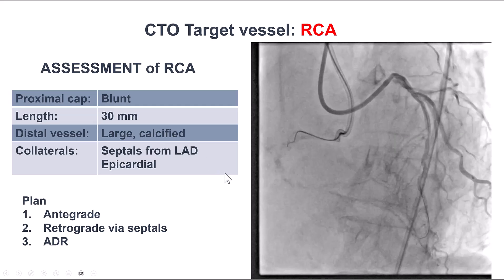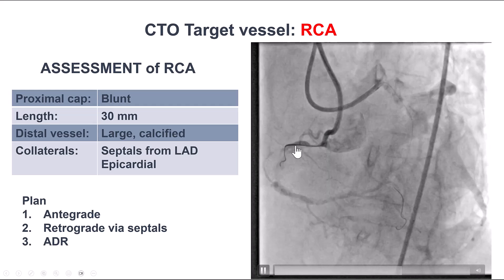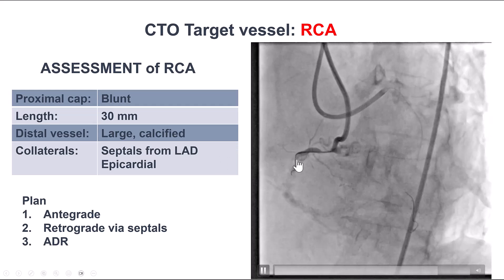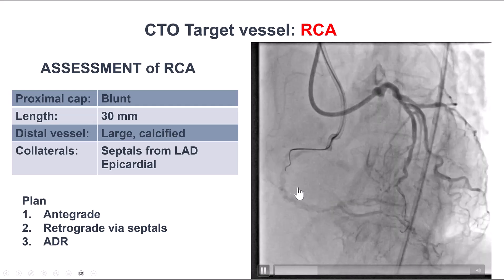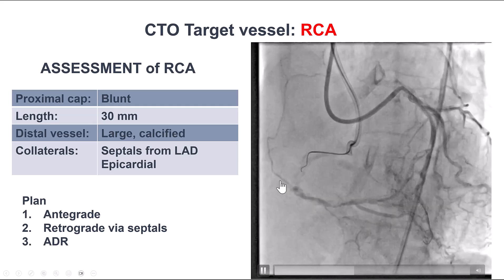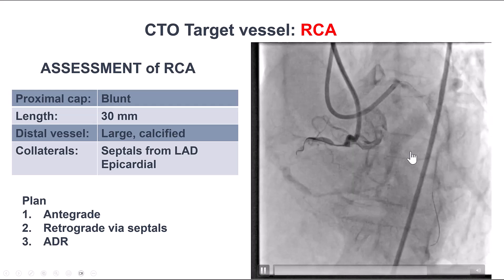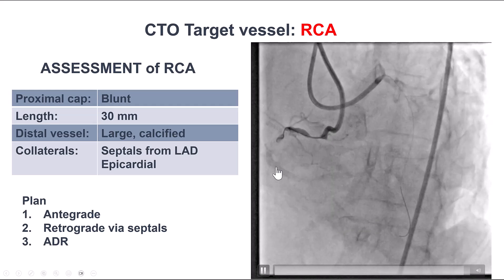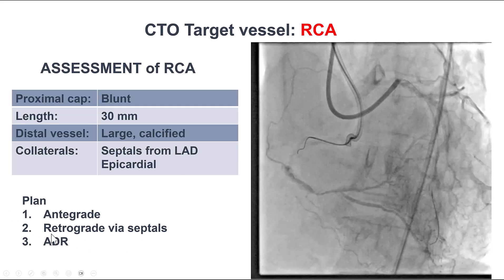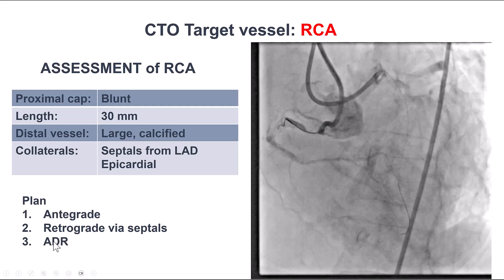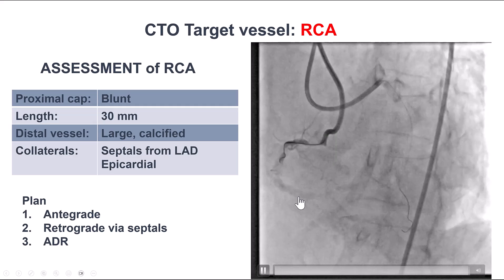To summarize, what we have is a CTO of the right with a blunt proximal cap, length of occlusion of about 30 millimeters with heavy calcification. The distal vessel is of good size but also has severe calcification, and the distal vessel fills through both septal and epicardial collaterals. Our plan was to try antegrade first. If that failed, go retrograde through septals, and leave ADR as the last option because the calcification would make reentry fairly challenging.